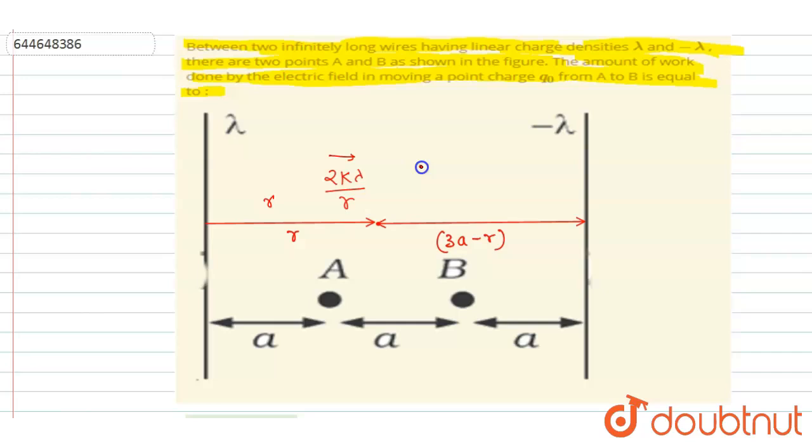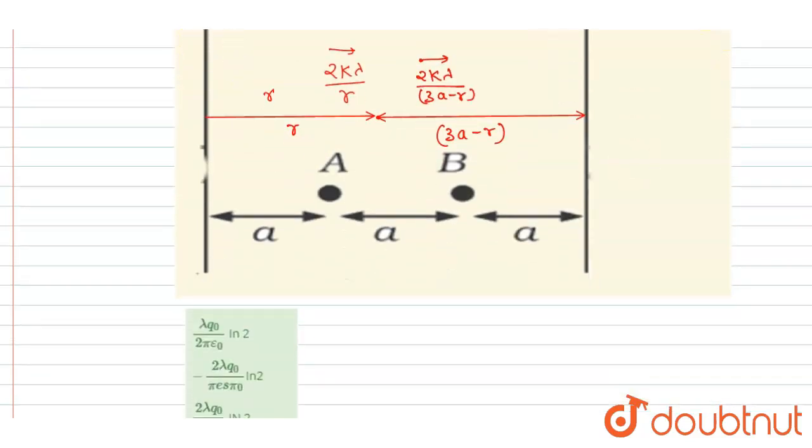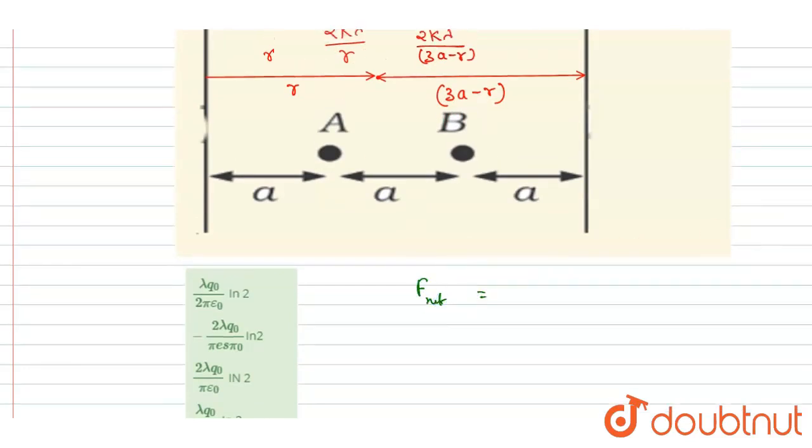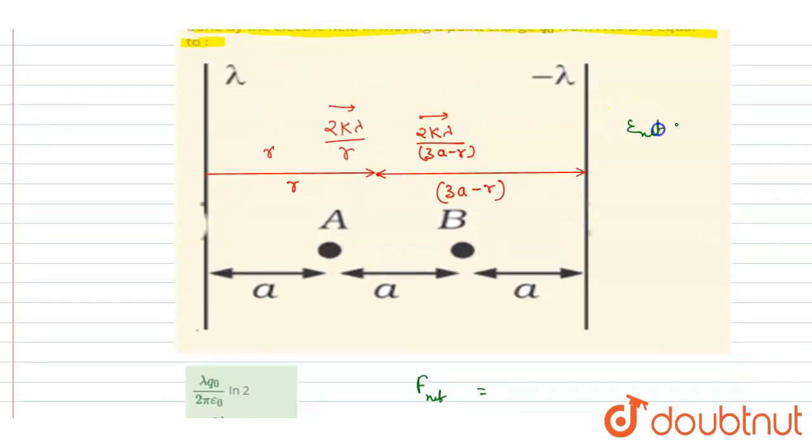So because of this wire, the electric field will be attractive and it will be 2k lambda by 3A minus R. If you see the net force on the charge Q naught, it will be like the net electric field. If you see the net electric field, if you take 2k lambda common here, it is 1 by R plus 1 by 3A minus R.